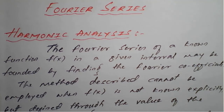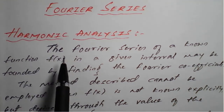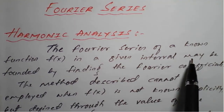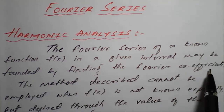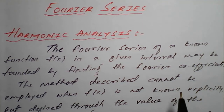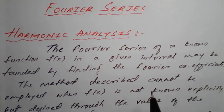What is harmonic analysis? The Fourier series of a known function f(x) in a given interval may be found by finding the Fourier coefficients. We have seen intervals of the kind 0 to 2π, 0 to 2l, -π to +π, -l to +l, 0 to π, and 0 to l — these are the different intervals we have studied.